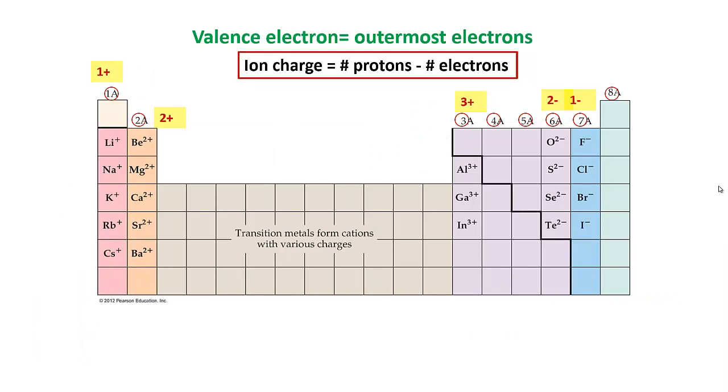Alright, so here's kind of a summary of what I was telling you earlier about if lithium has one electron, it's going to lose one electron and become positively charged. Beryllium has two electrons, it's going to want to lose two and become positively two charged.